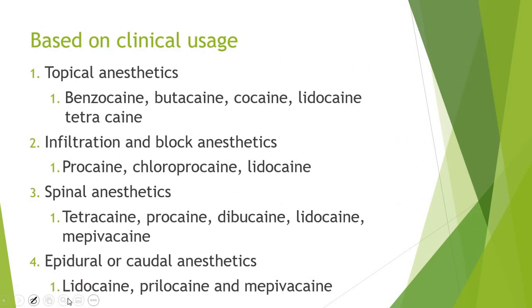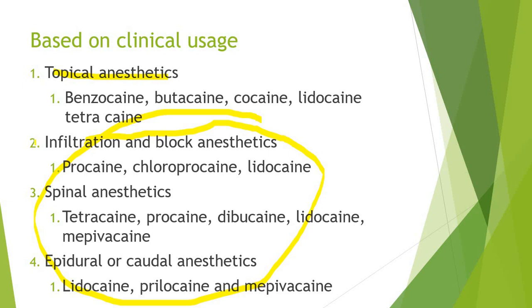Based on clinical usage, local anesthetics are classified as: topical anesthetics, which include benzocaine, cocaine, and lidocaine; infiltration or field block anesthesia; spinal anesthesia with spinal anesthetic drugs; and epidural or caudal anesthesia. Almost all types of local anesthetic drugs can be used depending on the application. You have to remember spinal anesthesia and epidural anesthesia as key clinical categories.